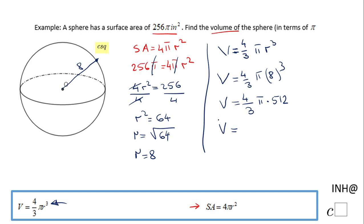So we have 2048 over 3π. This is the volume of this sphere: 2048 over 3π cubic inches.